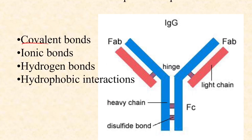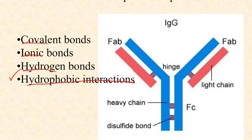All of these bonds — covalent (polar and nonpolar), ionic, hydrogen bonds, and hydrophobic interactions — are important for how a protein folds. A protein is one or more chains of amino acids folded into a three-dimensional structure. IgG, an antibody made up of multiple protein chains, requires covalent bonds, ionic bonds, hydrogen bonds, and hydrophobic interactions to form. Amino acids with hydrophobic R groups bury themselves in the interior of the folded protein, as far from water as possible, which has a strong impact on protein folding.